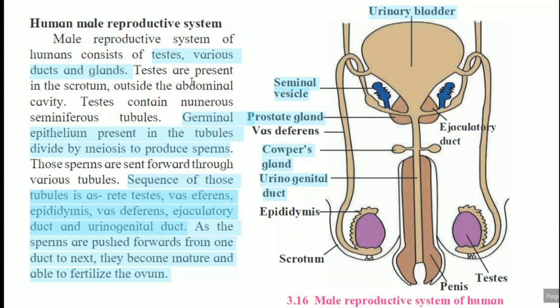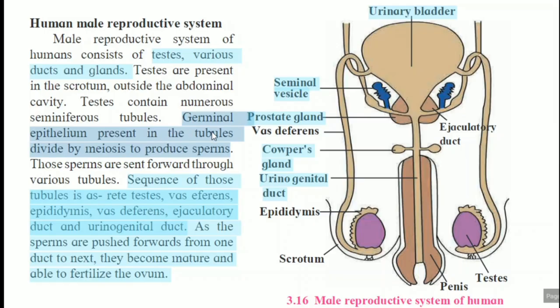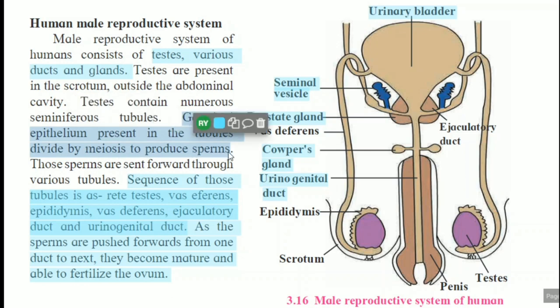Testis are present in the scrotum, outside the abdominal cavity. The scrotum is a sac-like structure inside which the testis are present, and this part is outside the abdominal cavity. Testis contain numerous seminiferous tubules — small tube-like structures. These seminiferous tubules contain germinal epithelium, and they get divided by the meiosis process to produce the sperms.